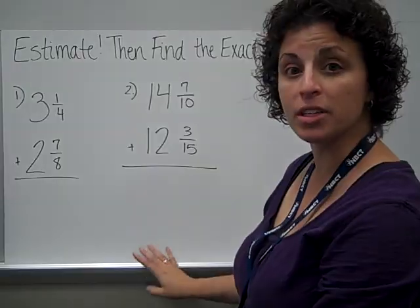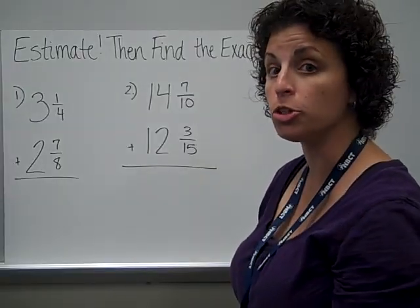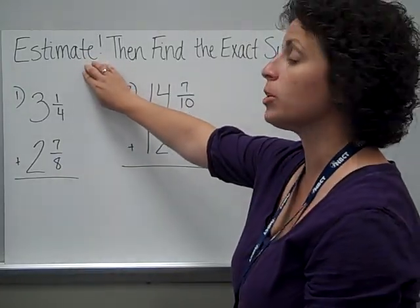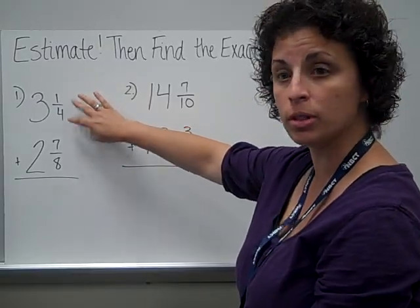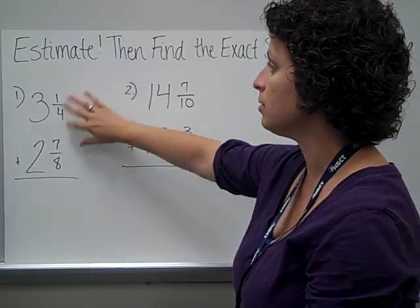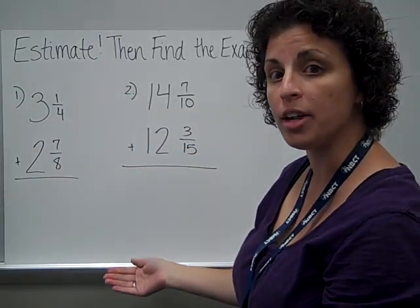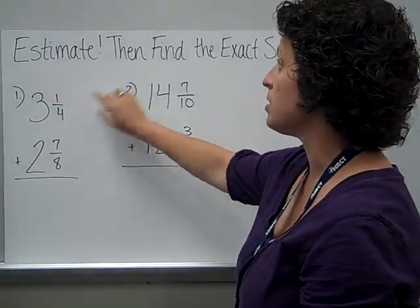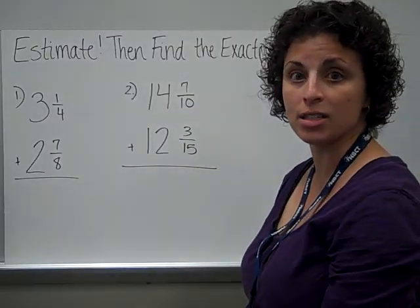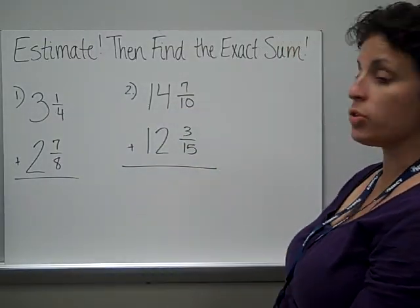I would like for you to solve these two problems in your math journal. I want you to do two things, though. First, I want you to estimate. Use that half or above or less. Look at those and see, and decide should you leave the whole number alone or round it up. Find an estimate for these. And then I want you to find the exact sum. Do these in your math journal.